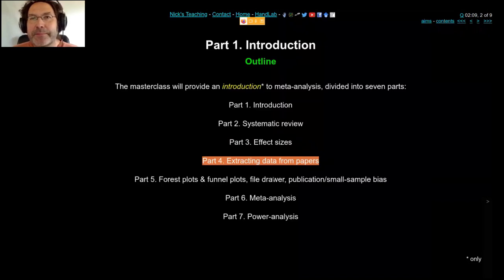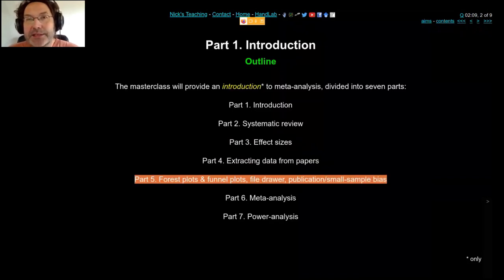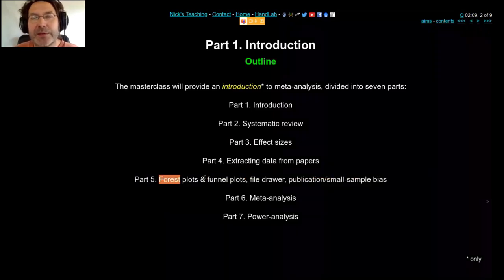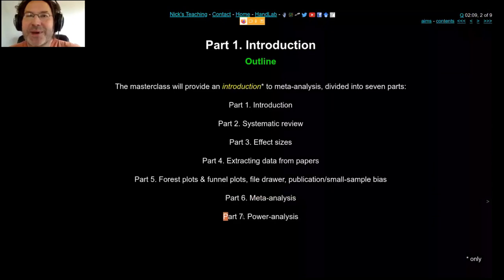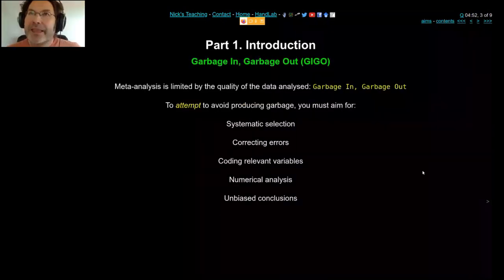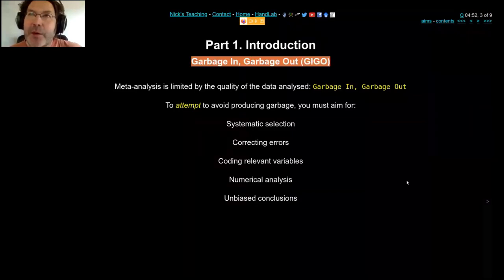Once you've got all your data out, you should then start plotting it and you should look at it. There's no point doing any sort of statistical analysis if you haven't looked at your data. In meta-analysis there are a couple of very common ways of plotting data - these are called forest plots and funnel plots. Then Part 6, for about 10 minutes that's where we do the meta-analysis. Then Part 7 on what once you've done a meta-analysis what you should do next, what's it for.